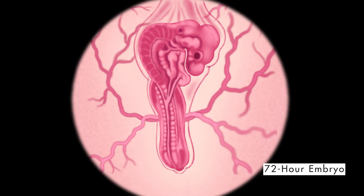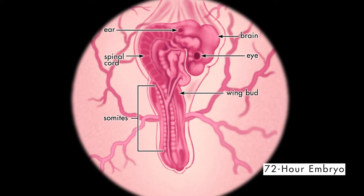Now we will look at the embryo after it has been in the incubator for 72 hours. Notice that the brain, eyes, ears, and spinal cord are more developed. Somites are still visible. Wing buds, which will become wings, and leg buds, which will become legs, are also visible. The tail bud has grown longer. The heart is also more developed.